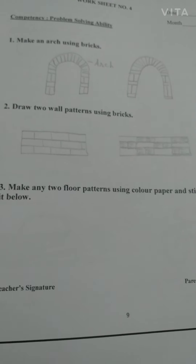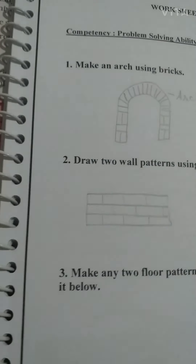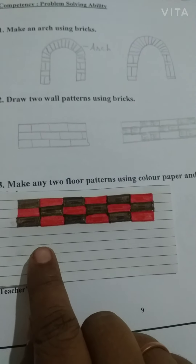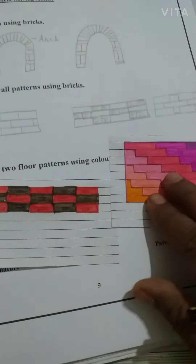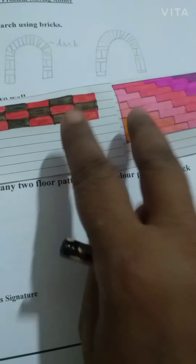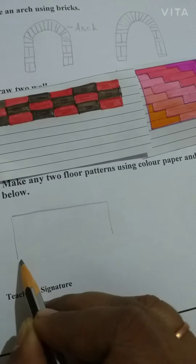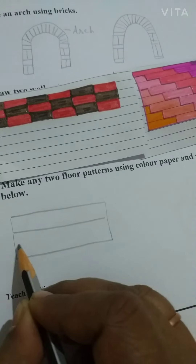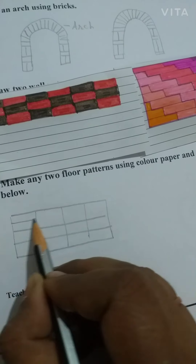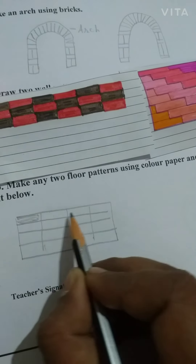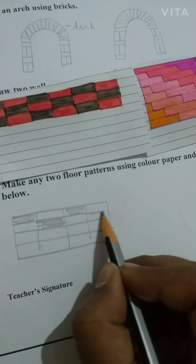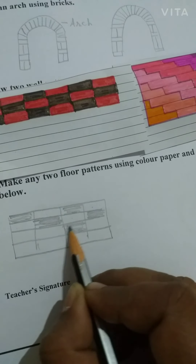The next question is: make any two floor patterns using color paper and stick it below. I have made two patterns for you. This is a simple one, and this is another one. I'll show you how I've made them. One brick is red and one brick is brown — I have just placed them like this, alternating: brown, red, brown, red. This way I have made a pattern.